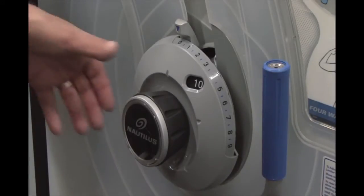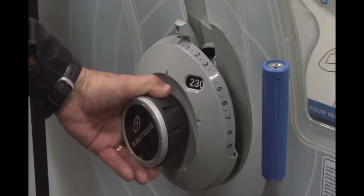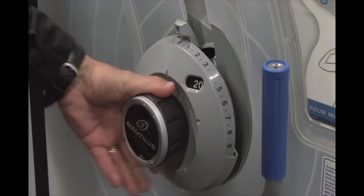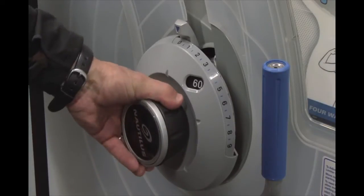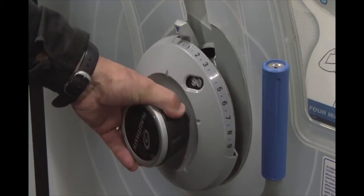Like all Nautilus One products, the Nautilus One Medical features the dial technology, where we can adjust the resistance from the exercise position in 10-pound increments.